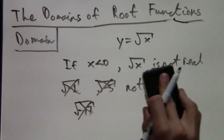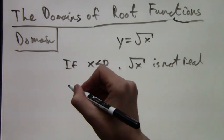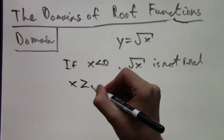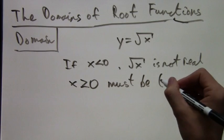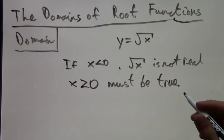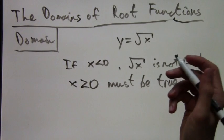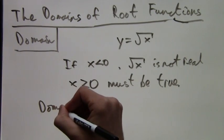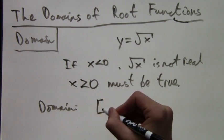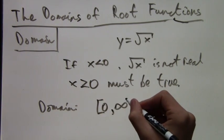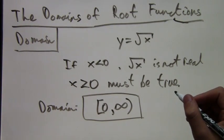This function, y equals root x, works only for x greater than or equal to 0. That is what we mean by the domain—it's the numbers we are allowed to plug in to this formula. The domain in interval notation is square bracket zero comma infinity with a parenthesis.